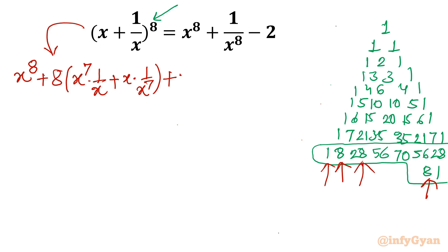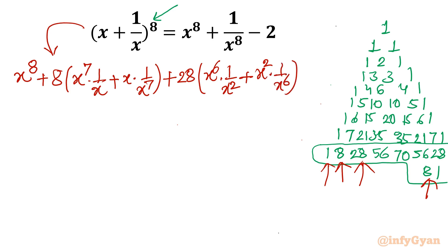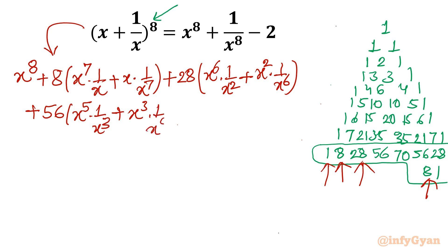Now 28: I will write x^6 times 1/x^2, plus x^2 times 1/x^6. 28 is also done. Now 56: similarly I will write x^5 times 1/x^3 — the powers should always sum to 8 — plus x^3 times 1/x^5. 56 is also done from both sides.